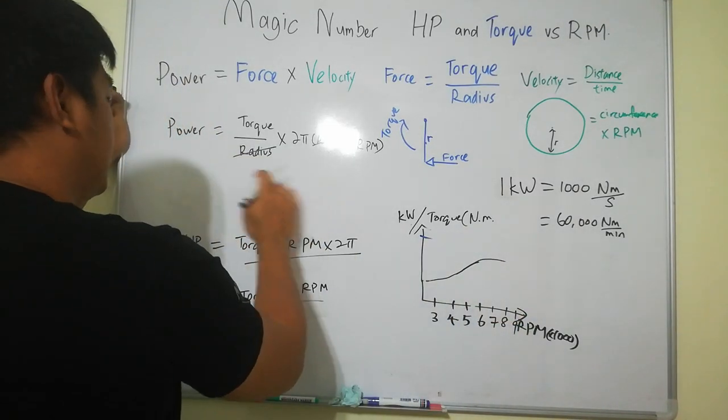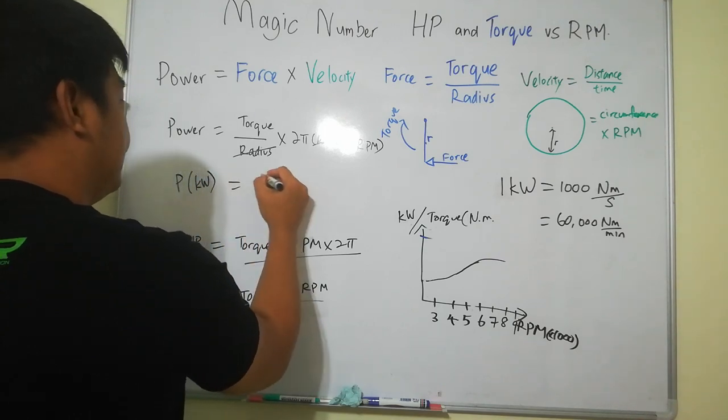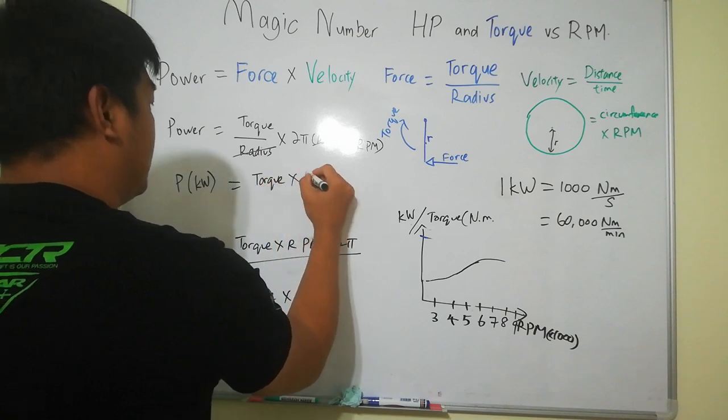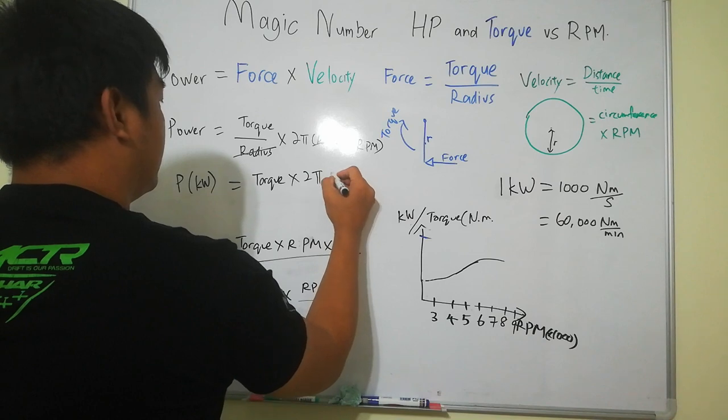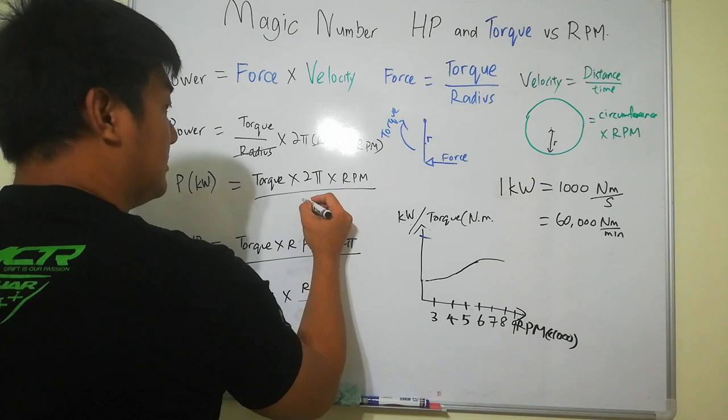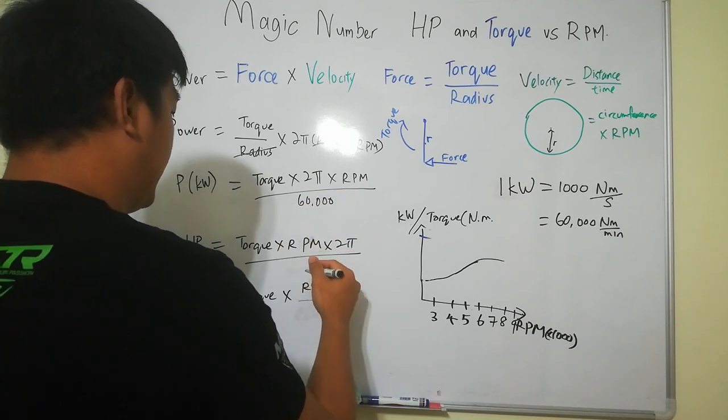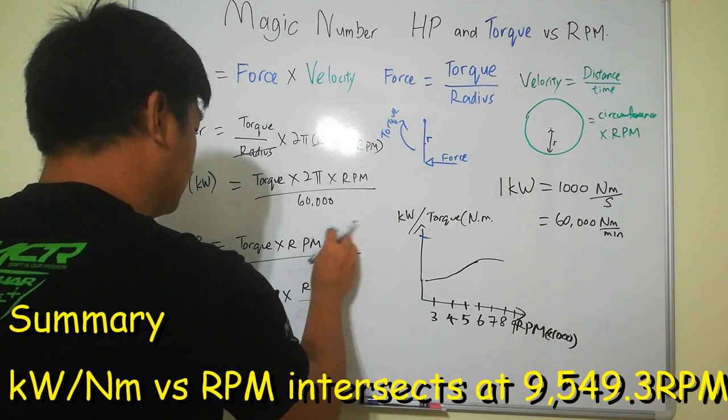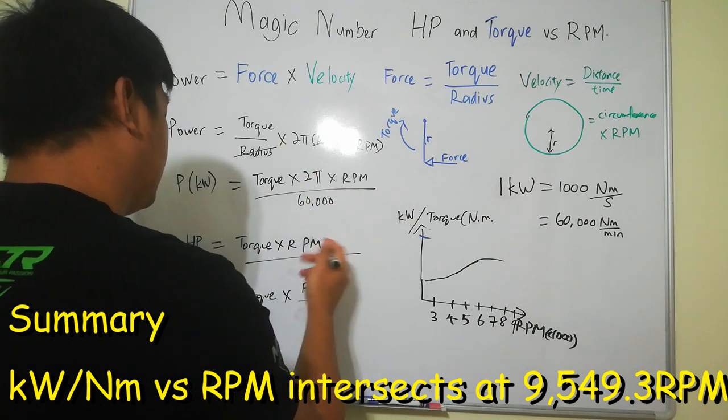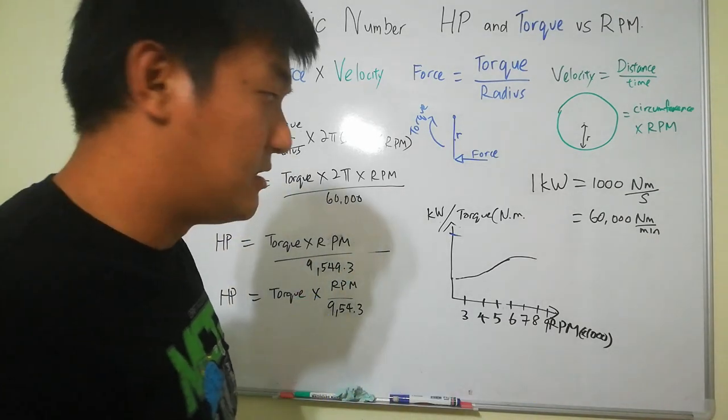Both sides I change into kilowatt. So power in kilowatt equals to torque times 2 pi times RPM divided by 60,000. So you can get that 2 pi divided by 60,000 is 9549.3 so this one becomes easier.